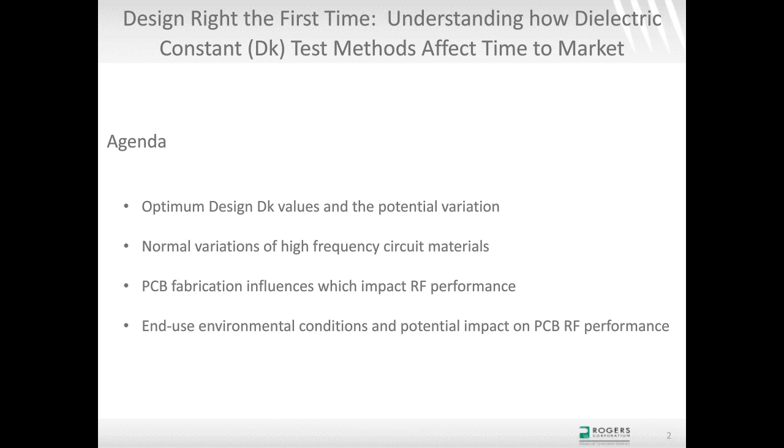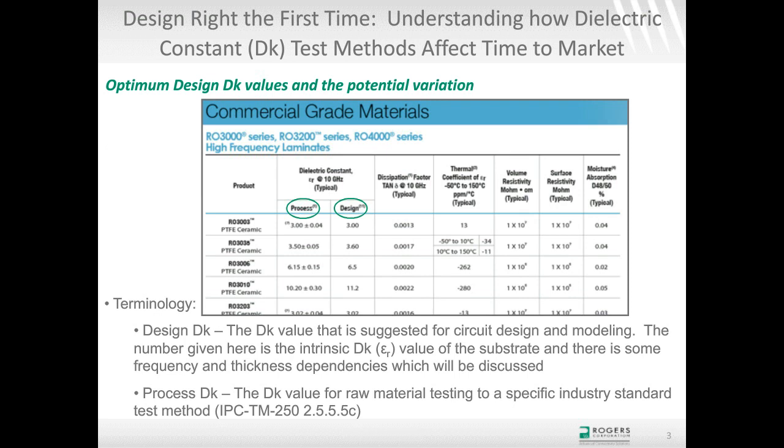On our product selector guide and data sheets, dielectric constant is listed in two categories: process Dk and design Dk. The process Dk tests the raw material with the IPC industry-standard clamping fixture method. Sometimes that number is not appropriate for circuit design, so we also perform testing using an actual microstrip transmission line circuit to define the dielectric constant as the material is used in circuit form. Process Dk looks at raw material properties, while design Dk is circuit-related with more influences — it's a better real-world number to use.